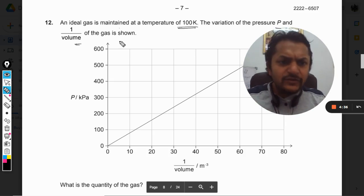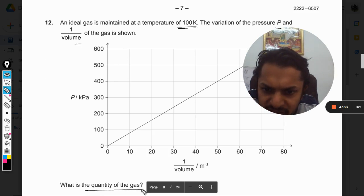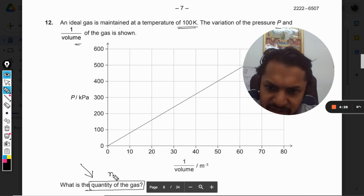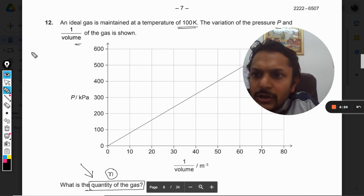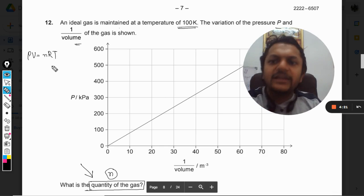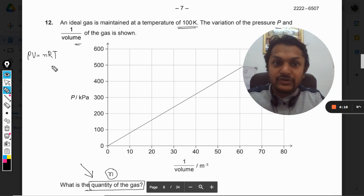We have to take values from this graph. What is the quantity of the gas? The question asks for the quantity of the gas, which means we need to find the number of moles. Because we are using ideal gas, the ideal gas equation is PV = nRT, which is always valid for an ideal gas.